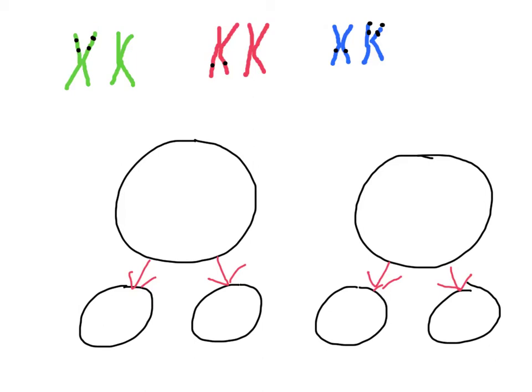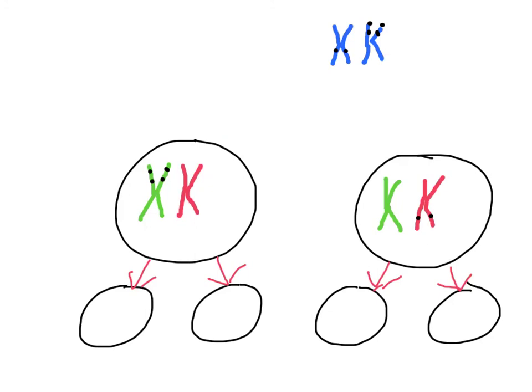So if during this first stage of meiosis, one of these two homologous pairs goes to this side and one goes to this side, what independent assortment is meaning is that this one could go either here or here. It's totally unrelated to whichever cell the number one chromosome, the green one, went to. And likewise, this could either go here or here. It's totally independent to what the other chromosomes have done.